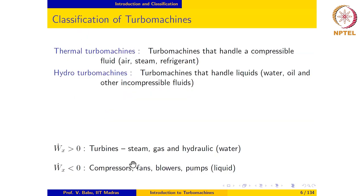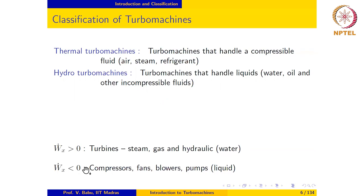We can also classify turbo machines based on whether they are power producing, namely turbines, or power absorbing. If it is power producing, it can be a steam turbine, a gas turbine, or a hydraulic turbine which uses water as the working substance. In the case of a power absorbing machine, we could have a compressor, fan, or blower — all of which handle air — or we could have a pump which handles any liquid including water.